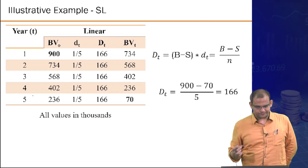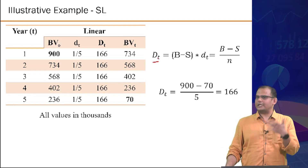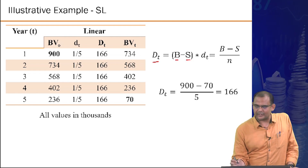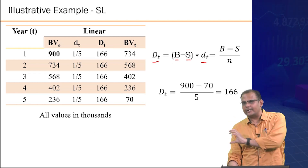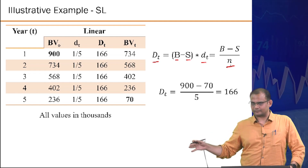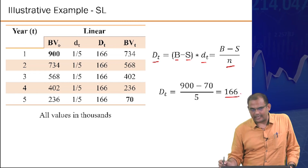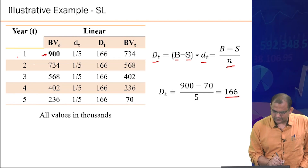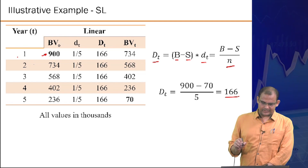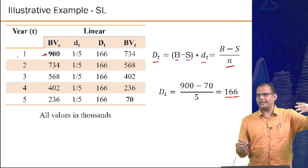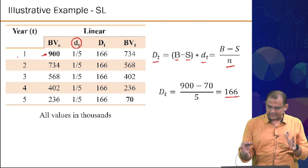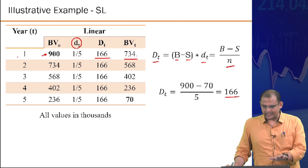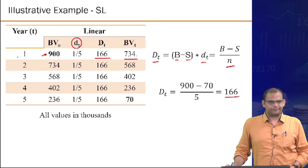Linear method: total depreciation per year is (B minus S) / N = (900,000 minus 70,000) / 5 = 166,000. Starting from 900, year 1 book value is 900 minus 166 = 734. Year 2: 734 minus 166 = 568. Year 3: 568 minus 166 = 402.